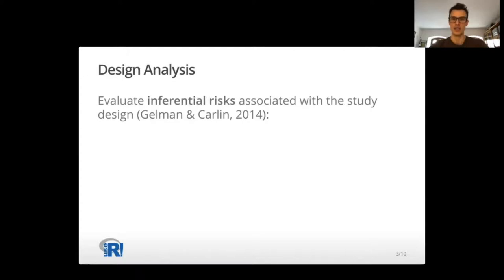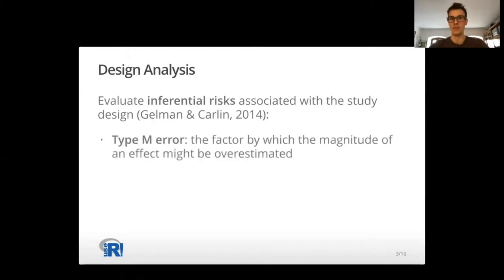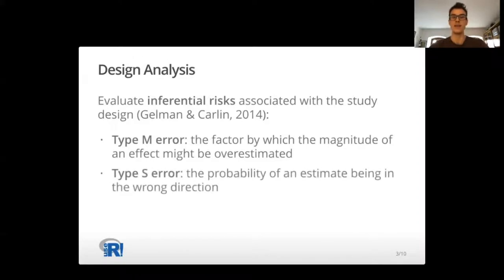other inferential risks such as the type M error—the factor by which the magnitude of an effect might be overestimated—and type S error, the probability of an estimate being in the wrong direction.